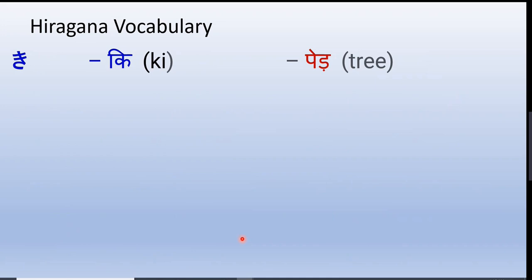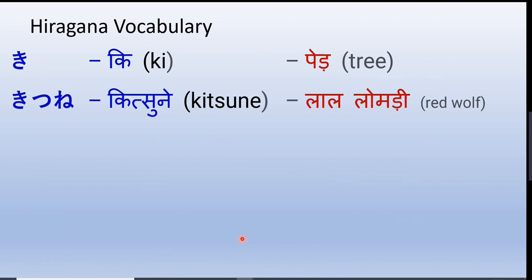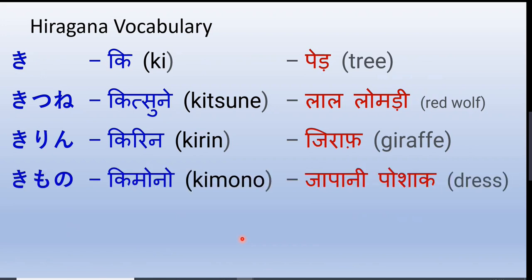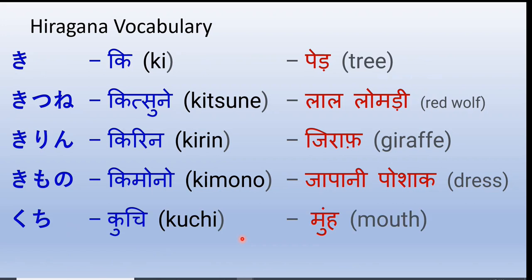Kagi — keys. Ki — tree or wood; it is a single syllable word. Kitsune — the red fox found in Japan. Kirin — giraffe. Kimono — the famous Japanese dress worn by Japanese ladies.